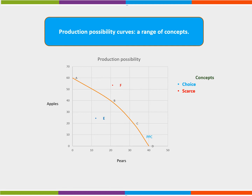Remember the basic economic problem is due to infinite wants but finite resources. Movements along the PPC show the trade-off between the range of choices that a firm has. The relationship shown in changing between two specific points on the PPC shows the opportunity cost.